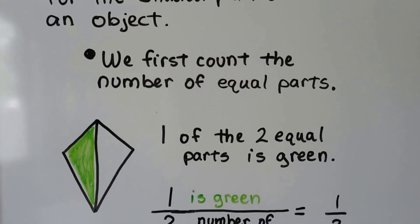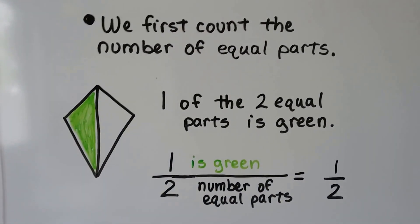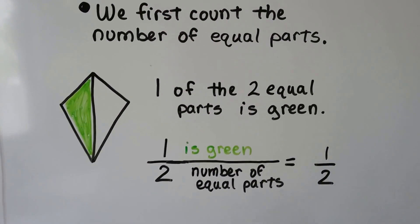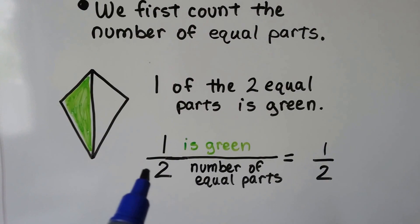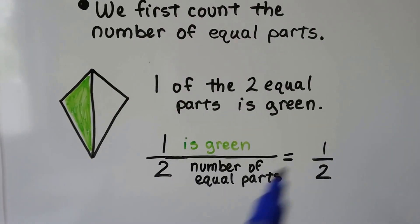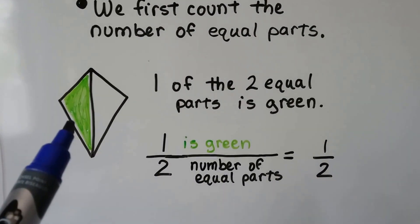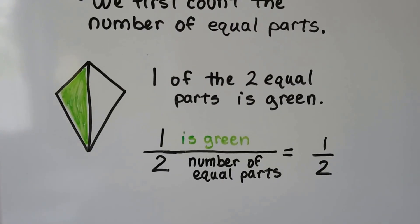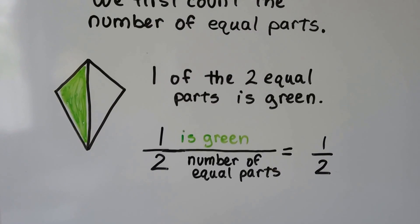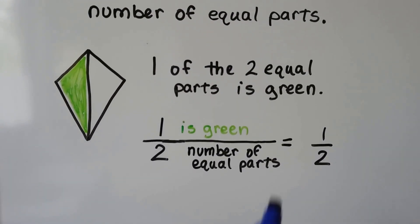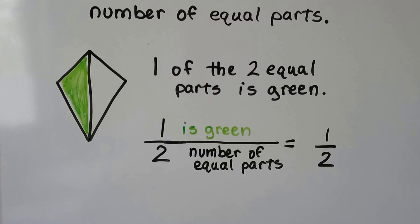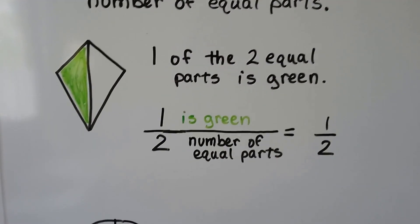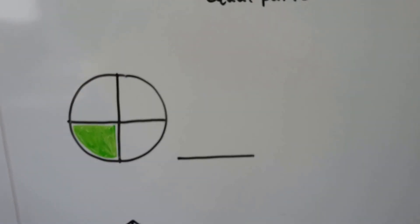We can write the fraction for the shaded part of an object. We first count the number of equal parts — how many equal parts are there? One, two. We put that at the bottom. That's the number of equal parts: two. How many parts are green? One. So that goes on the top. One is green, two is the number of equal parts.